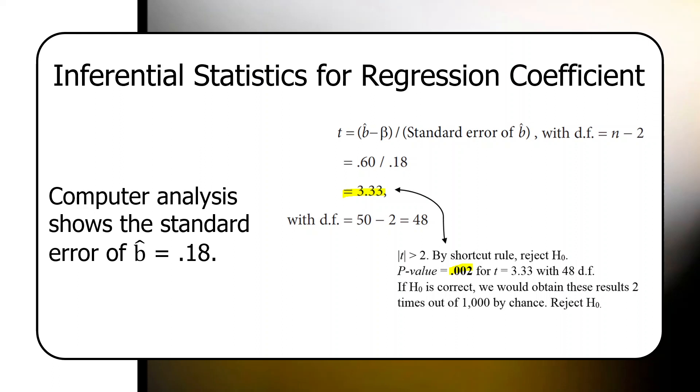Translation, if H0, the null hypothesis is correct, we would obtain these results by chance two times out of 1,000. So, of course, because .002 is less than .05, we would reject the null hypothesis.